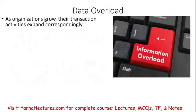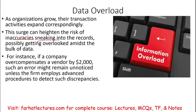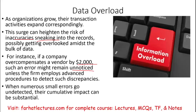Another reason for information risk is data overload. As the company grows, their transactions grow as well. This surge could heighten the risk of inaccuracies because you have a lot of transactions — some incorrect transactions might sneak into the record without being noticed. For example, a company might overcompensate a vendor by $2,000 in error, and that error might go unnoticed unless you have some sort of internal control system to stop these errors from happening.